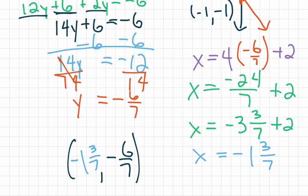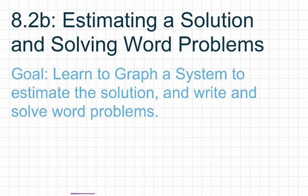Initially I was planning on getting into solving word problems as well, but we're going to get rid of that and come back to it in our next video. So 8.2b turns out to be only estimating a solution, and our goal is to learn to graph a system in order to estimate the solution. Write down any questions you might have — the x and y intercepts might have been a bit confusing — and make sure you ask questions so we can address any concerns in class.